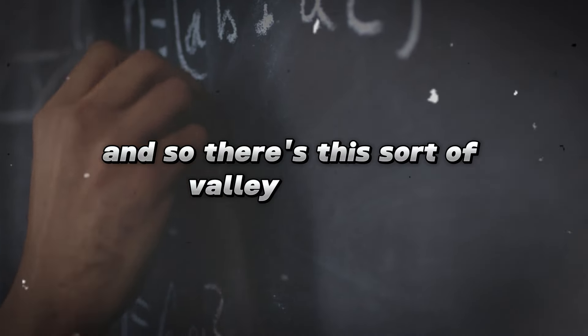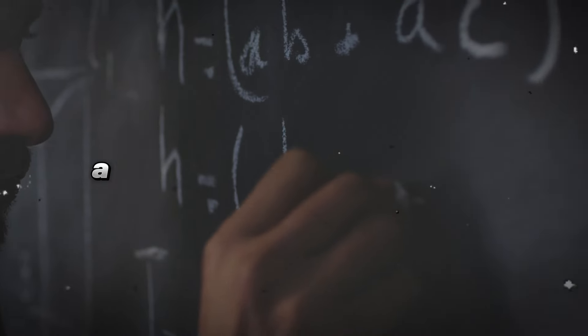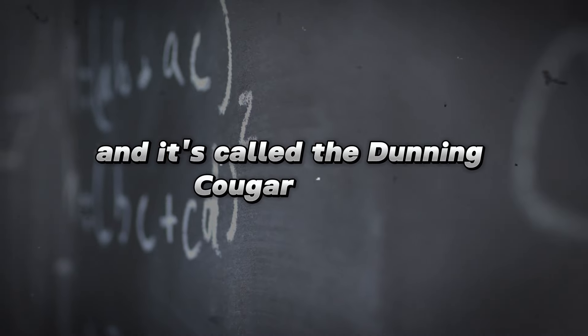And so there's this sort of valley in there, a valley of false confidence. This has been studied by others and it's called the Dunning-Kruger effect.